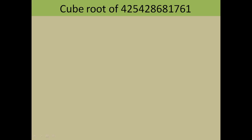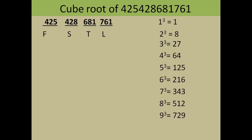Suppose you have to find the cube root of 425428681761. First, you will divide this number into pairs of three, starting from the right-hand side. You will get four pairs, and the number of pairs equals the number of digits in the final answer. So your final answer will have four digits: F, S, T, and L — first, second, third, and last digit.